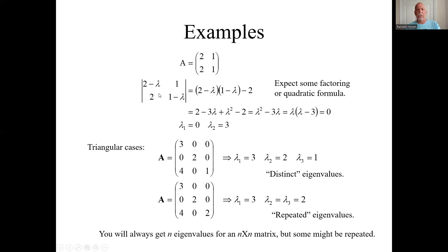So find its determinant. Top left times bottom right minus the product of these: two minus lambda, one minus lambda minus two. This leads to a quadratic equation. In this case, it's lambda squared minus three lambda, which is easily factored. And the roots or the solving lambdas are zero and three. There are our eigenvalues.